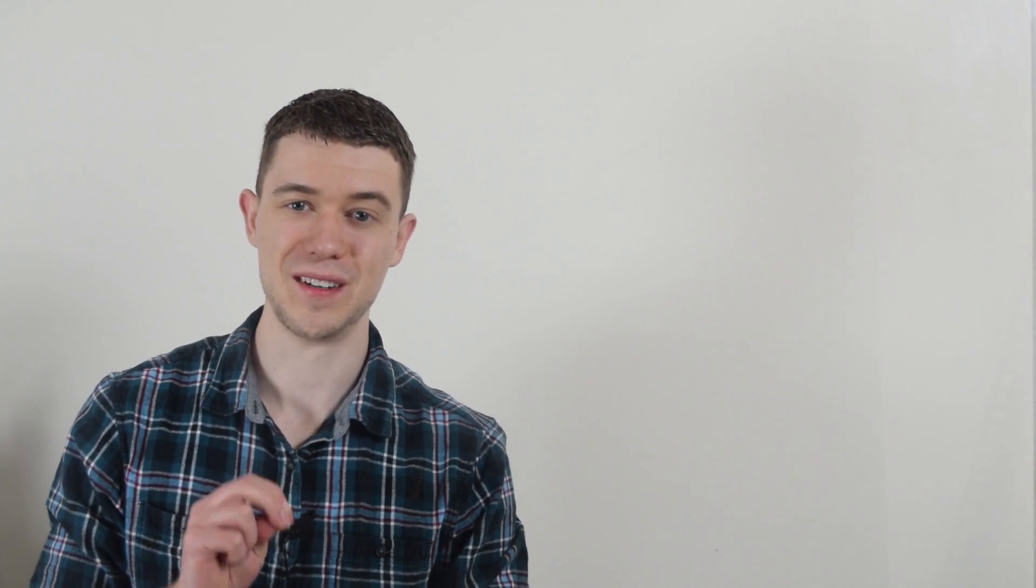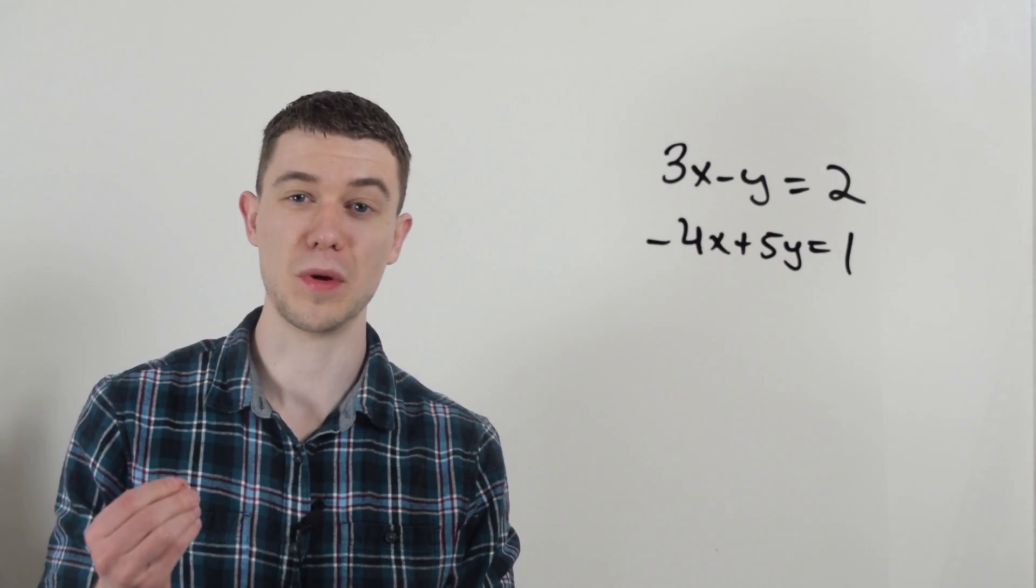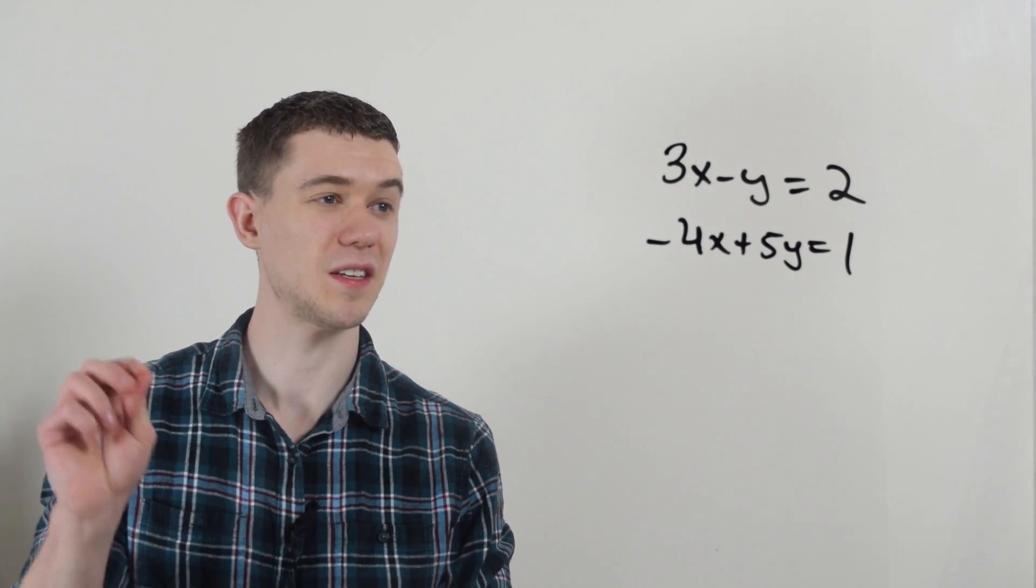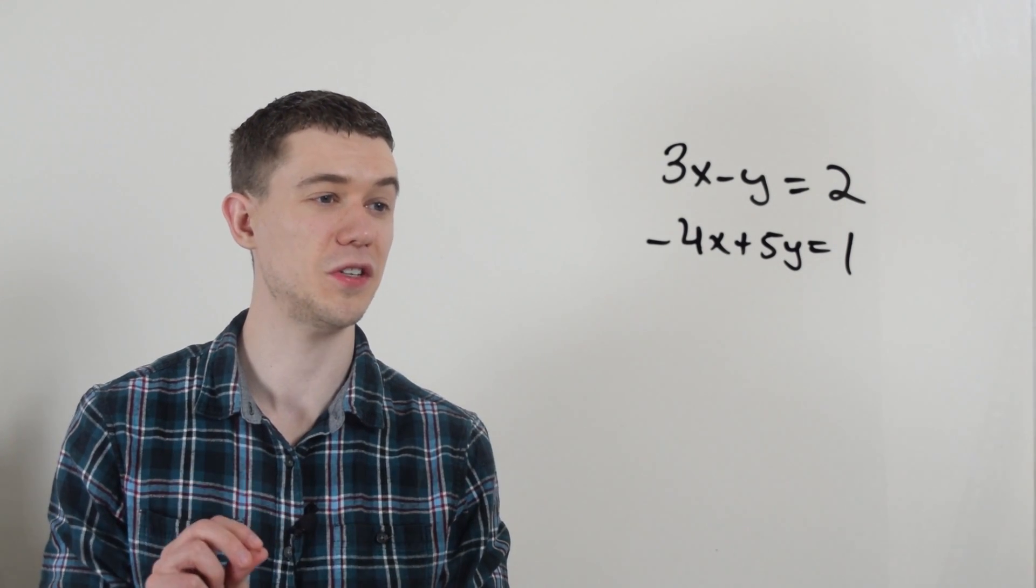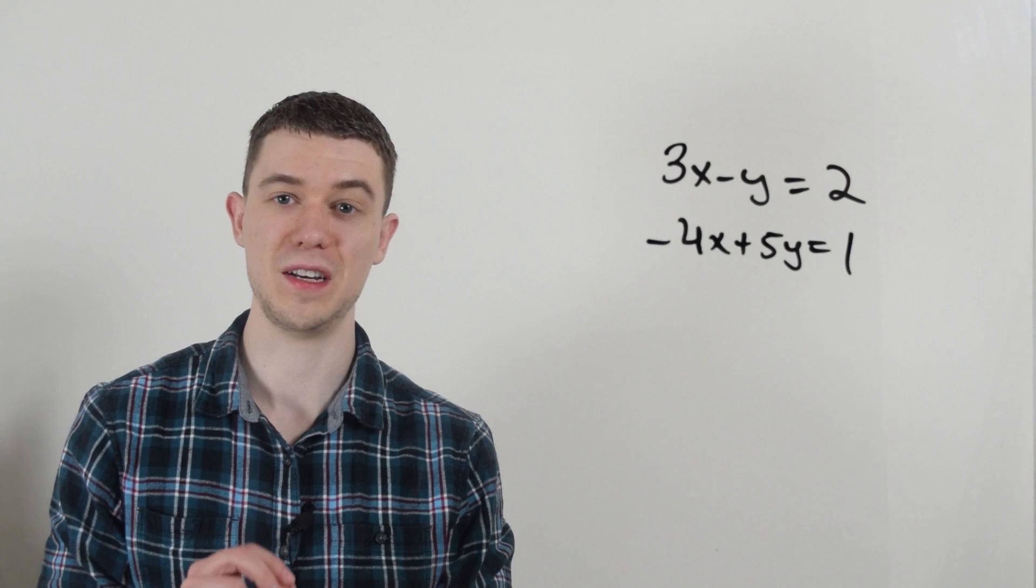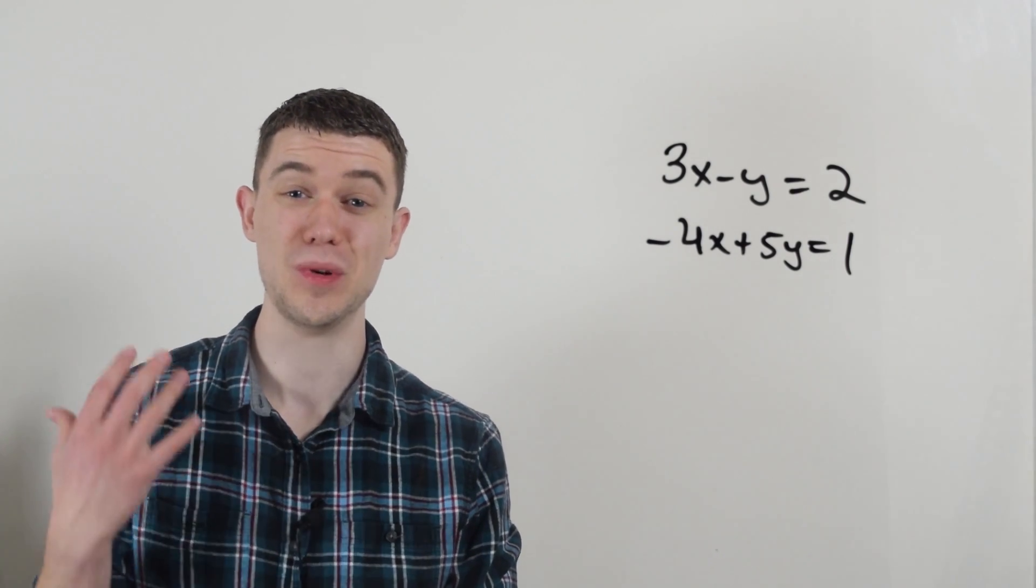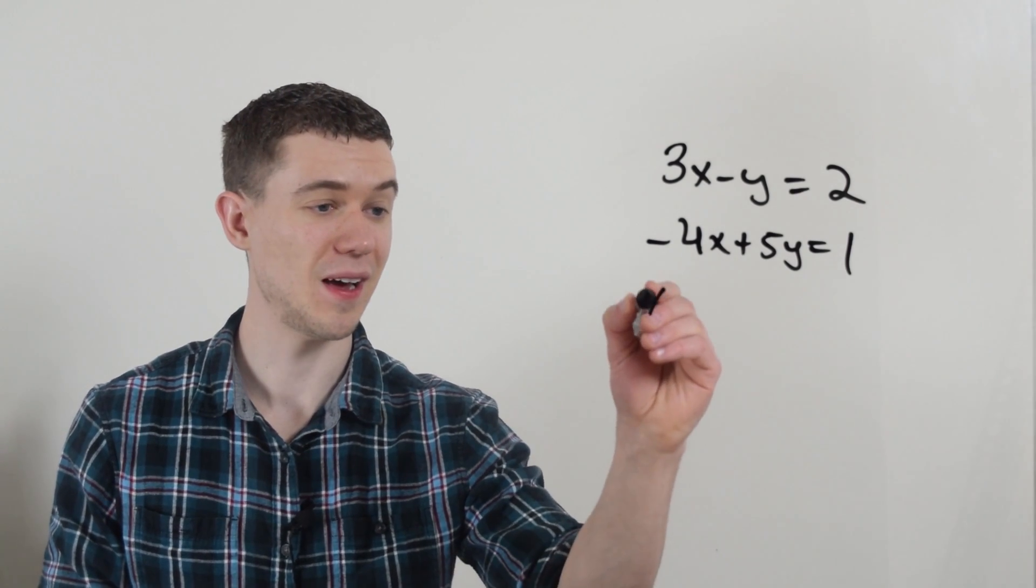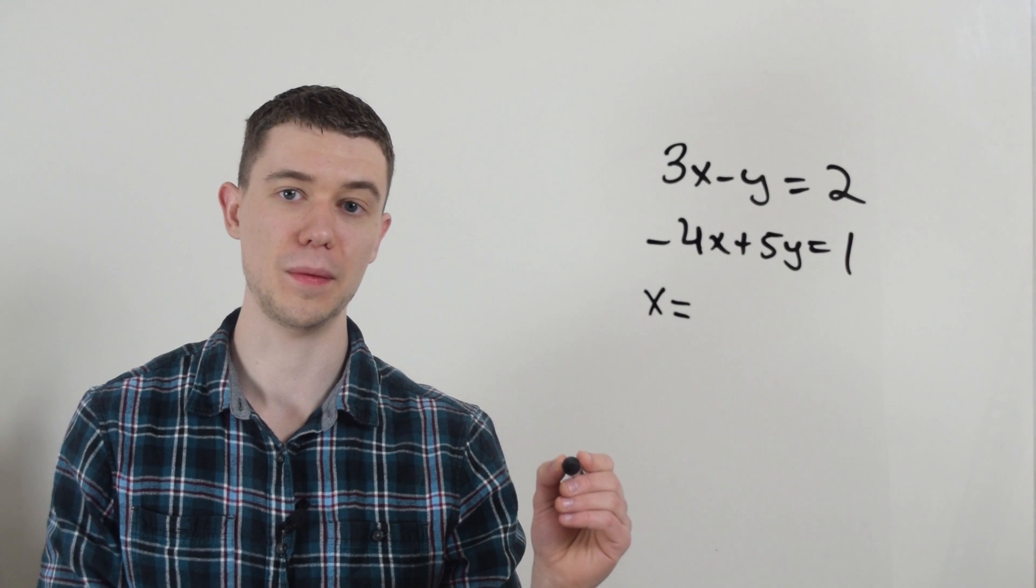Let's take a look at one more example to make sure you've got this down. Here I have another system of equations, simultaneous equations. 3x minus y equals 2. 4x plus 5y equals 1. And let's do the trick. So here we go. X is equal to, and remember how this works.